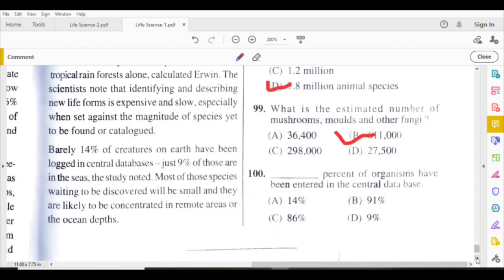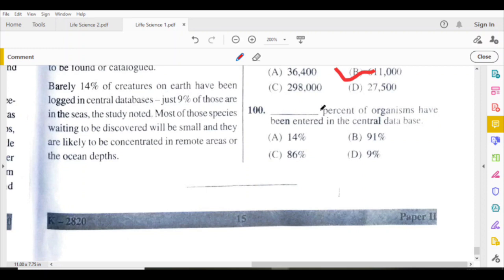Last question: How much percent of organisms have been entered in the central database? The answer is 14%. See here: Barely 14% of creatures have been logged in the central databases.